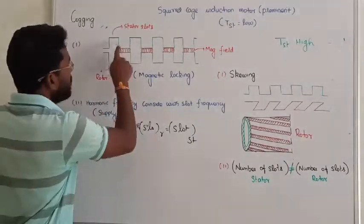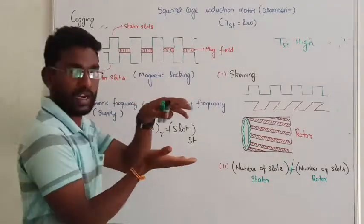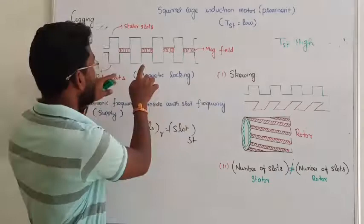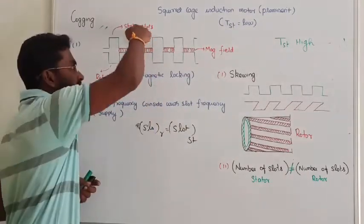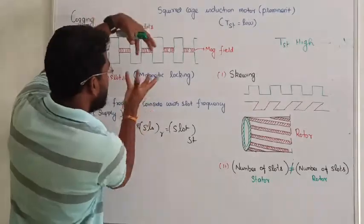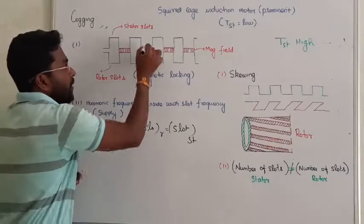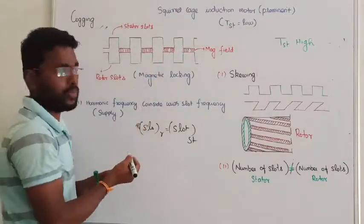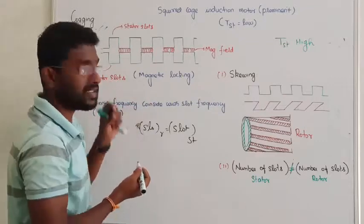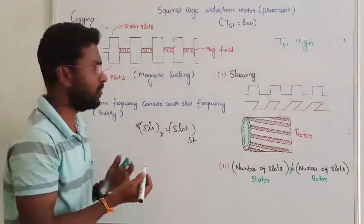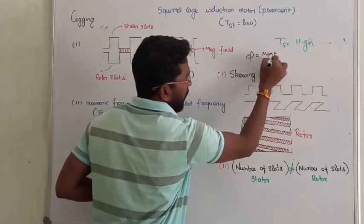When the slots on the stator and the slots on the rotor are equal and facing towards each other, the air gap is very low. When the air gap is very low, the reluctance is very, very low. Flux is very high because flux equals MMF divided by reluctance — if reluctance is very less, the magnetic flux strength becomes very high.